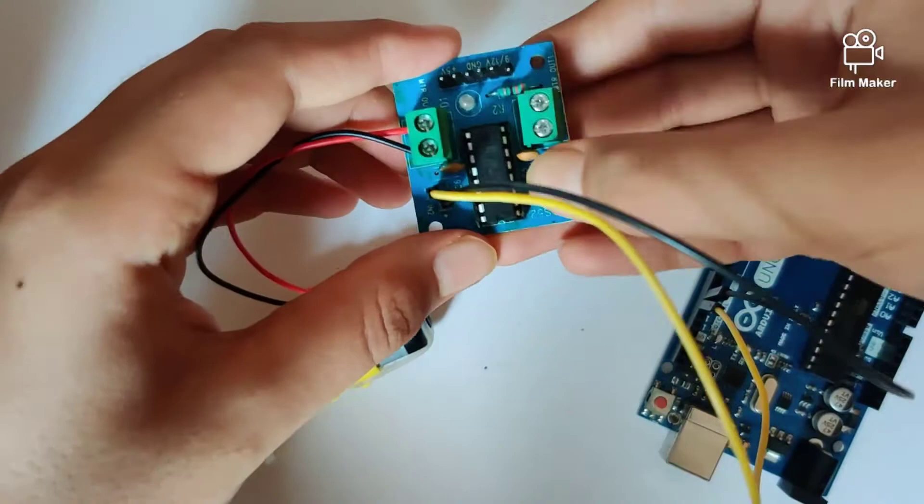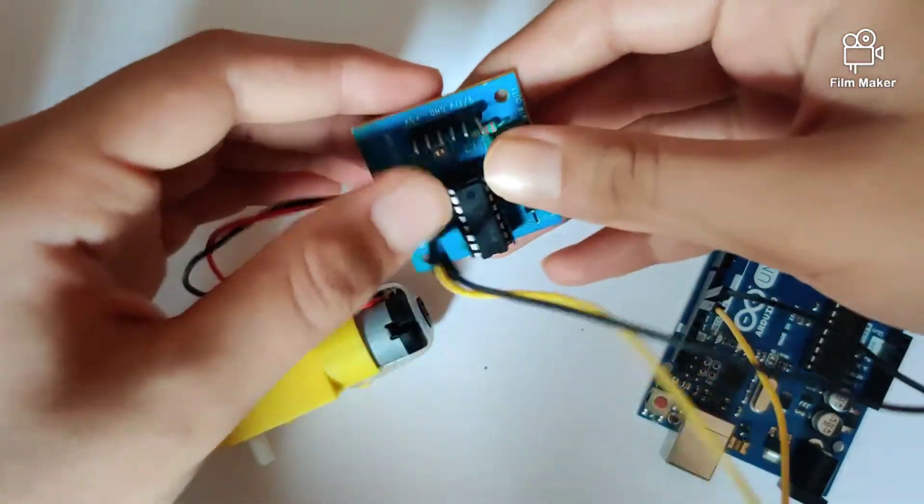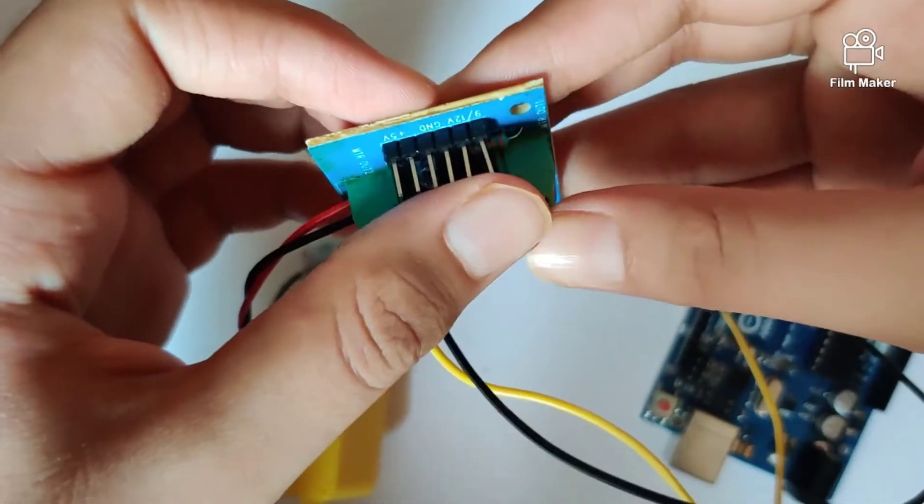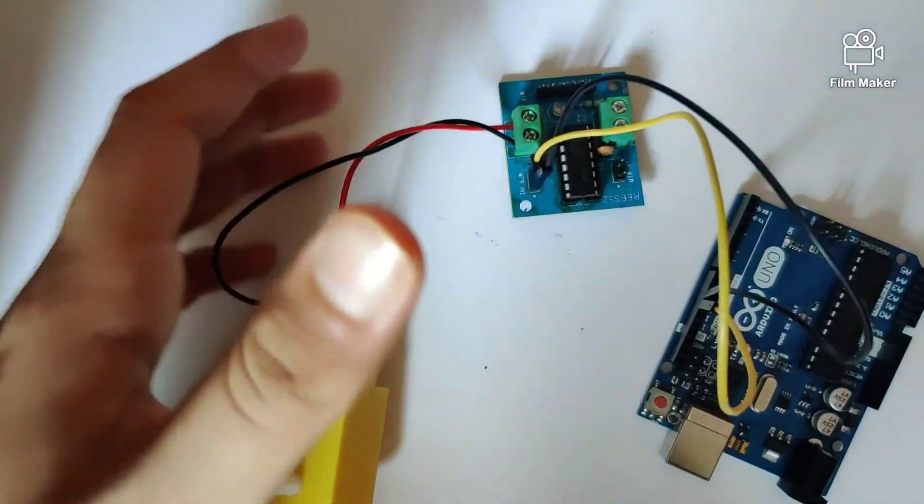For this video we're only using one motor, so we won't be dealing with this side. But what we do have to do is connect GND and the 5-volt ports of the motor driver.